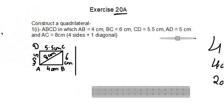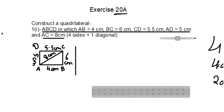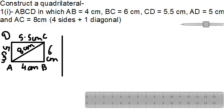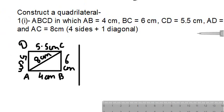Let's read the first question: Construct quadrilateral ABCD in which AB = 4 cm, BC = 6 cm, CD = 5.5 cm, AD = 5 cm, and diagonal AC = 8 cm. You can see this is a question of four sides and one diagonal — five elements in total.